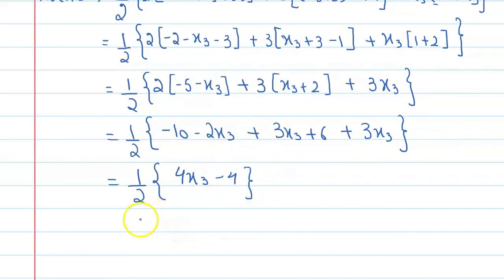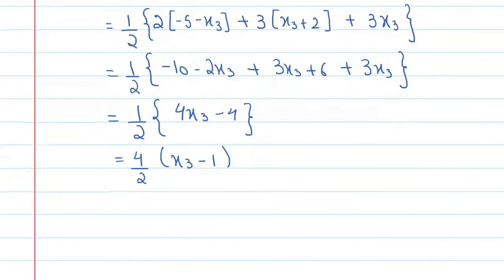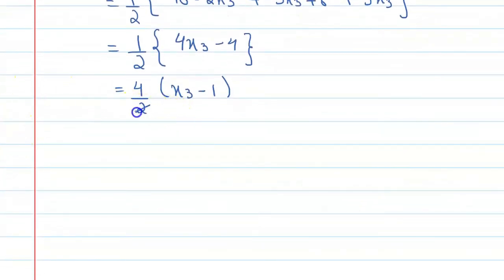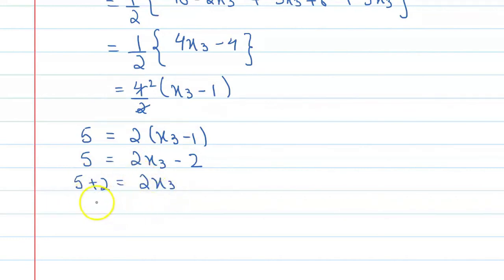The area of the triangle is given as 5 square units. Simplifying one-half times (4x3 - 4) gives 2(x3 - 1). Setting this equal to 5: 5 = 2(x3 - 1), which gives 5 = 2x3 - 2. Moving -2 to the left: 5 + 2 = 2x3, so 7 = 2x3, therefore x3 = 7/2.